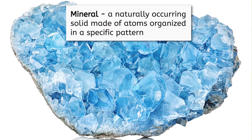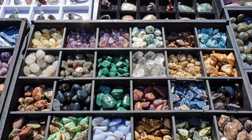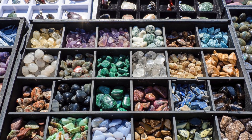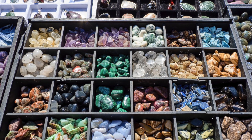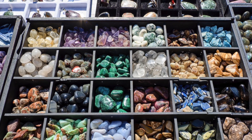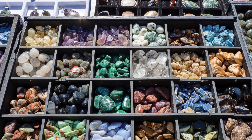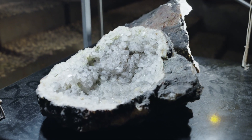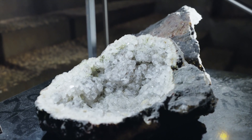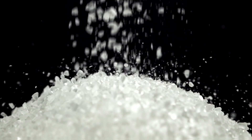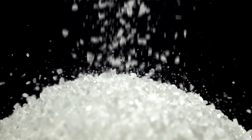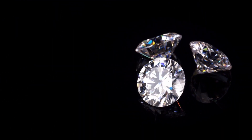A mineral is a naturally occurring solid made of atoms organized in a specific pattern. This atomic structure gives each mineral its unique properties such as color, hardness, and crystal shape — kind of like different Lego pieces. There are thousands of minerals, ranging from the common salt on your kitchen table to the diamonds in a jeweler's shop.